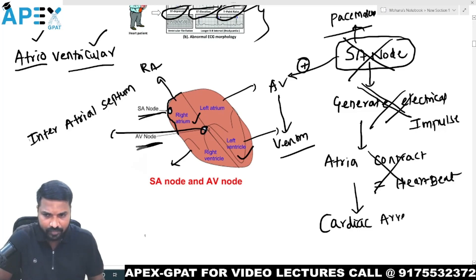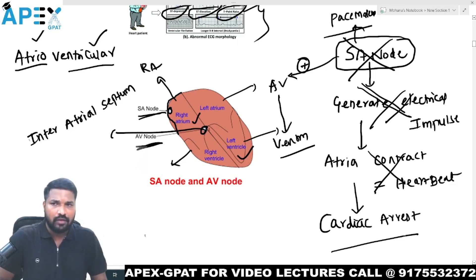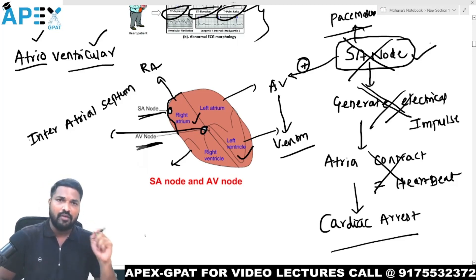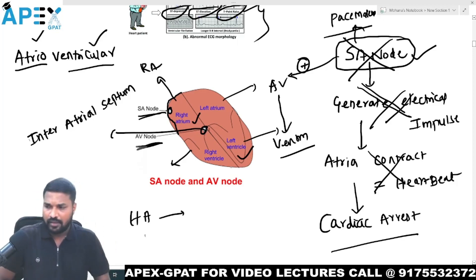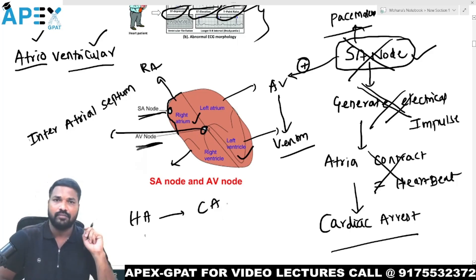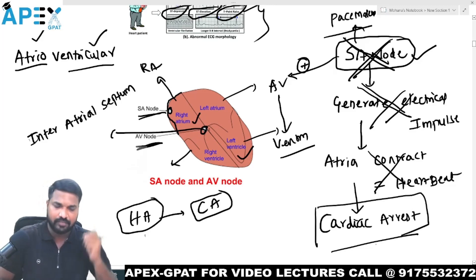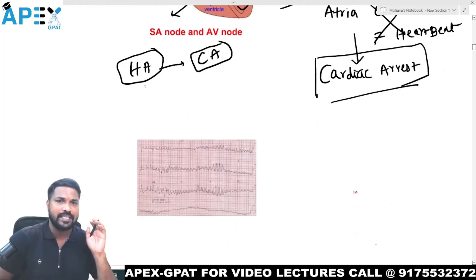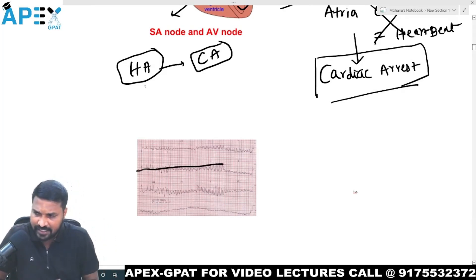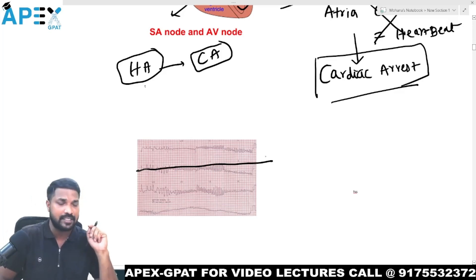When there is no contraction of the atria and ventricles, this is called cardiac arrest. So, coronary artery blockade or spasm leads to heart attack, while SA node malfunction leads to cardiac arrest. In cardiac arrest, there is no electrical impulse, so the ECG is a straight line. In a heart attack patient, you can find ST elevation, T wave rise, and other abnormalities in the ECG.